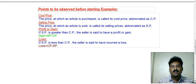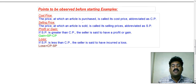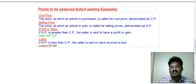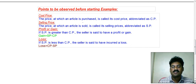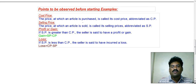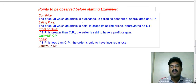When an item has been sold, whatever amount we receive is called the selling price. The difference between cost price and selling price will result in either a loss or a profit. If cost price is more than selling price, there is a loss. If selling price is more than cost price, there is a profit.